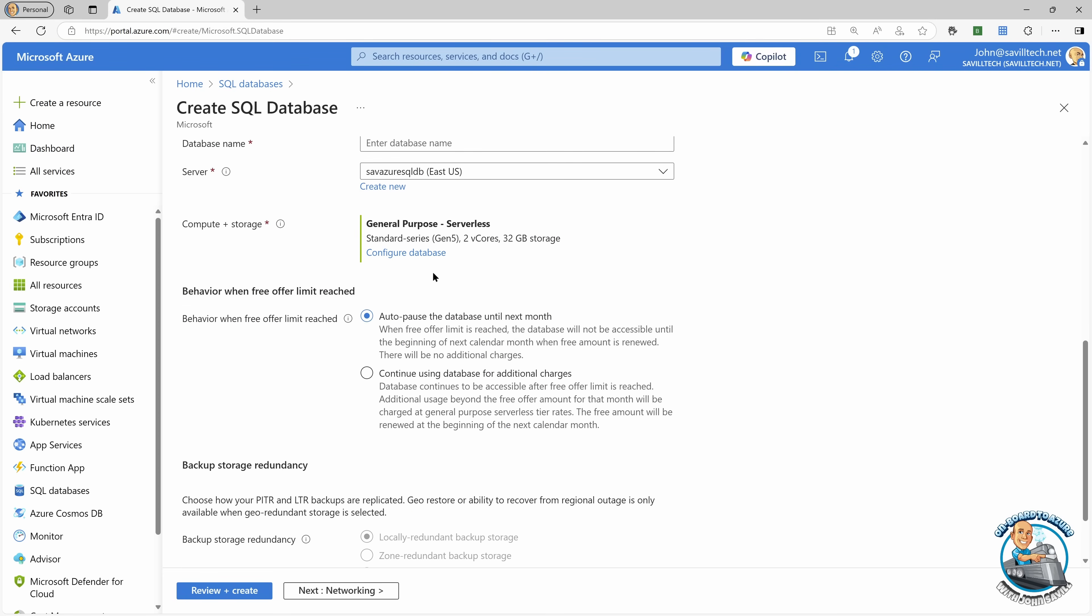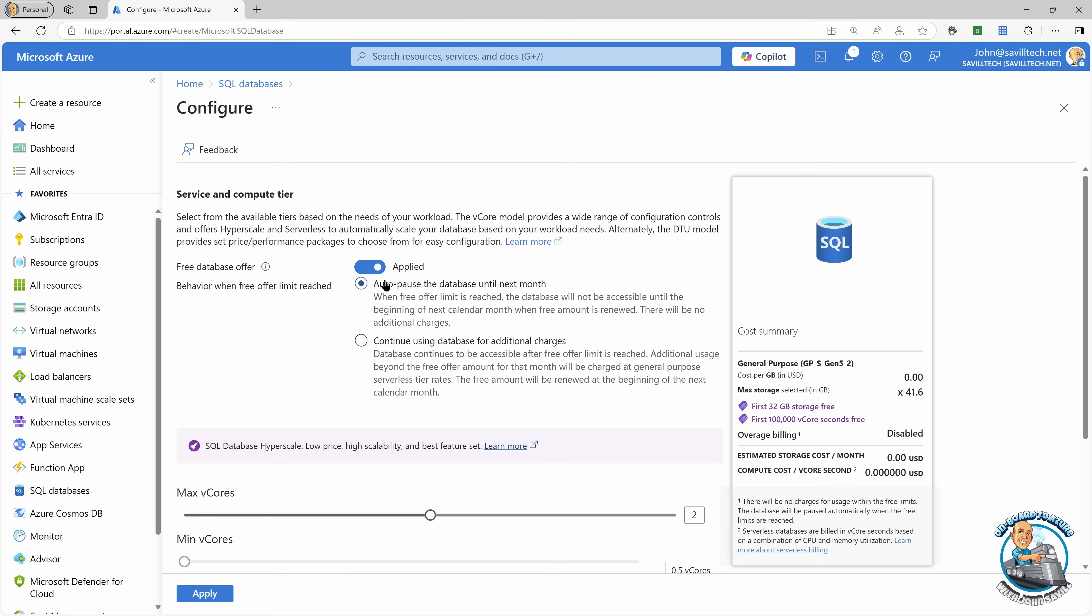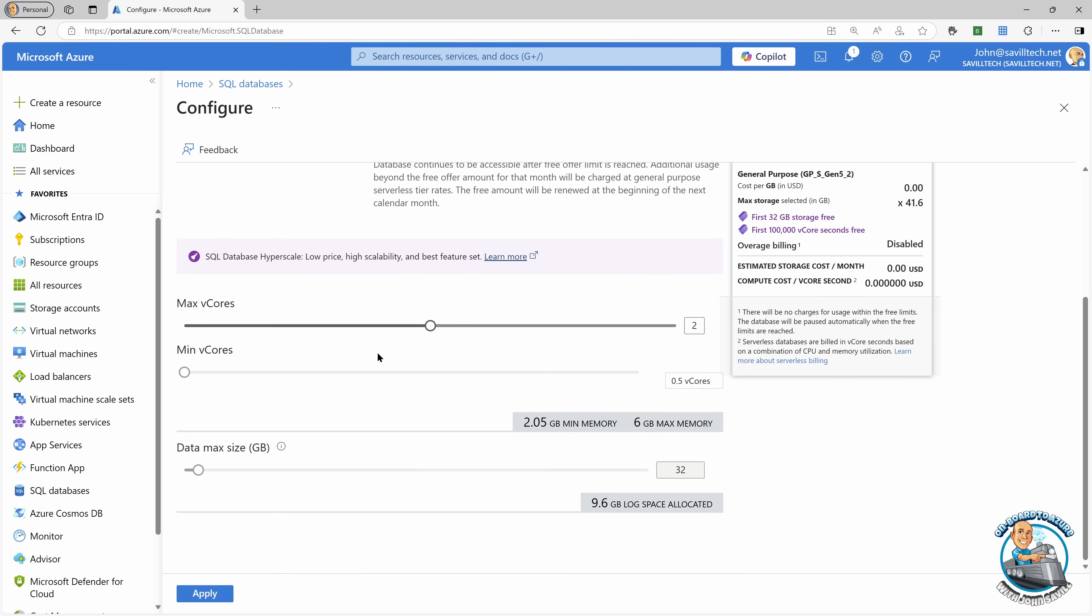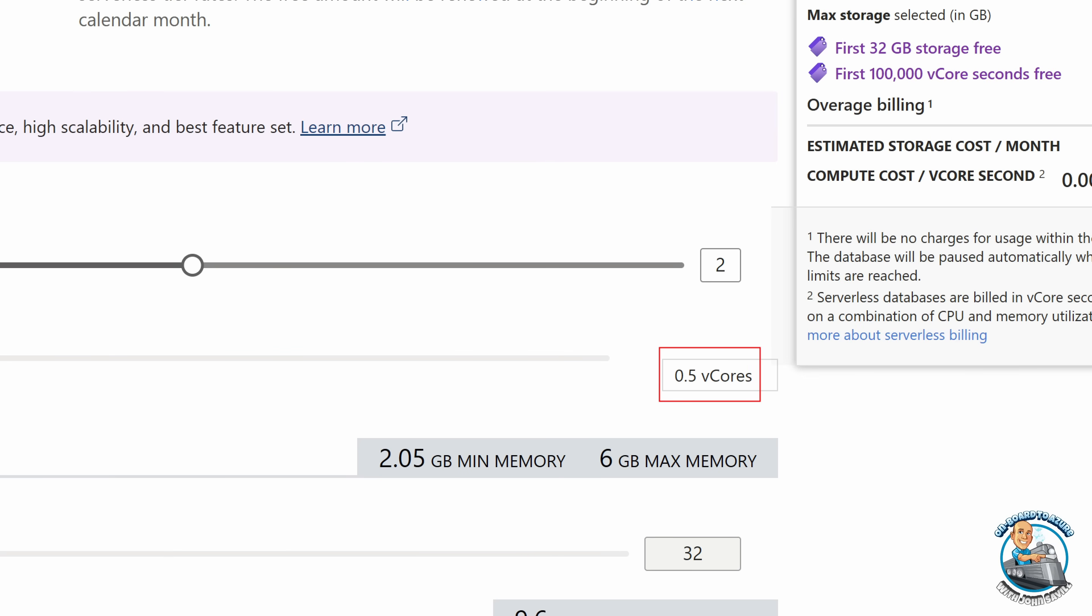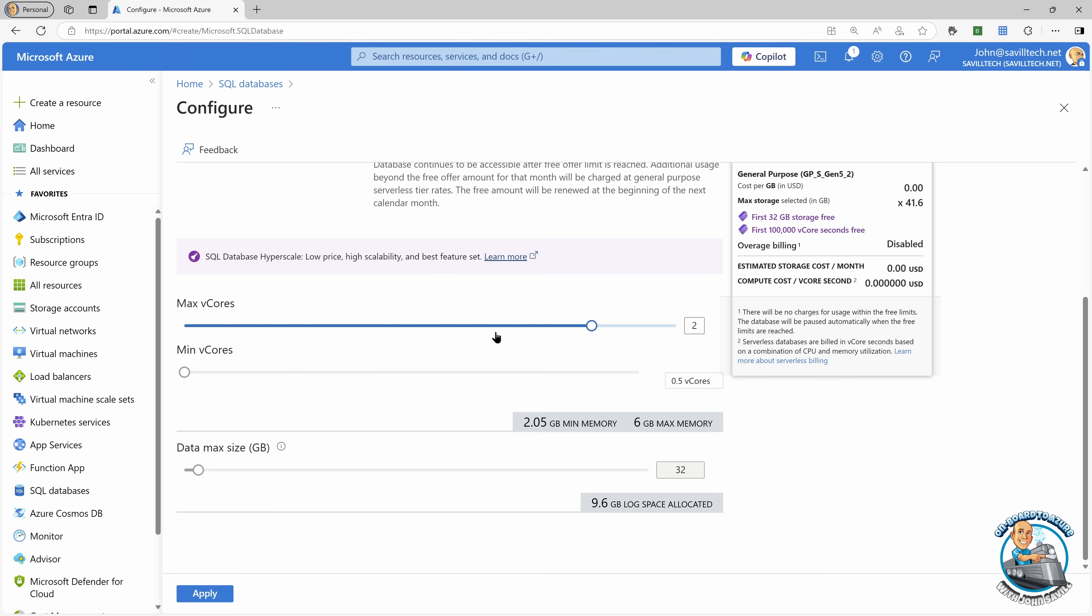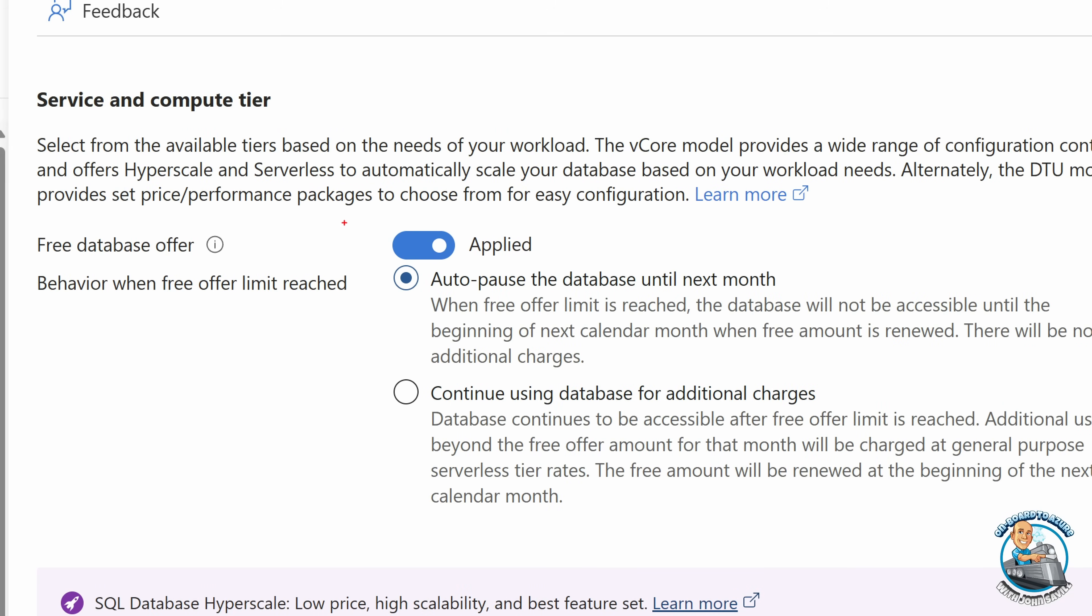But then if we scroll down and do the configure database, well, this is where we can select the size of actually what the instance maximum is. And you'll notice the minimum is half a vCore, and I can scale this up to four. Now, this is because what I have configured is, yes, I'm using the free database offer. And obviously, I could turn that off, and then I could do very different configurations.